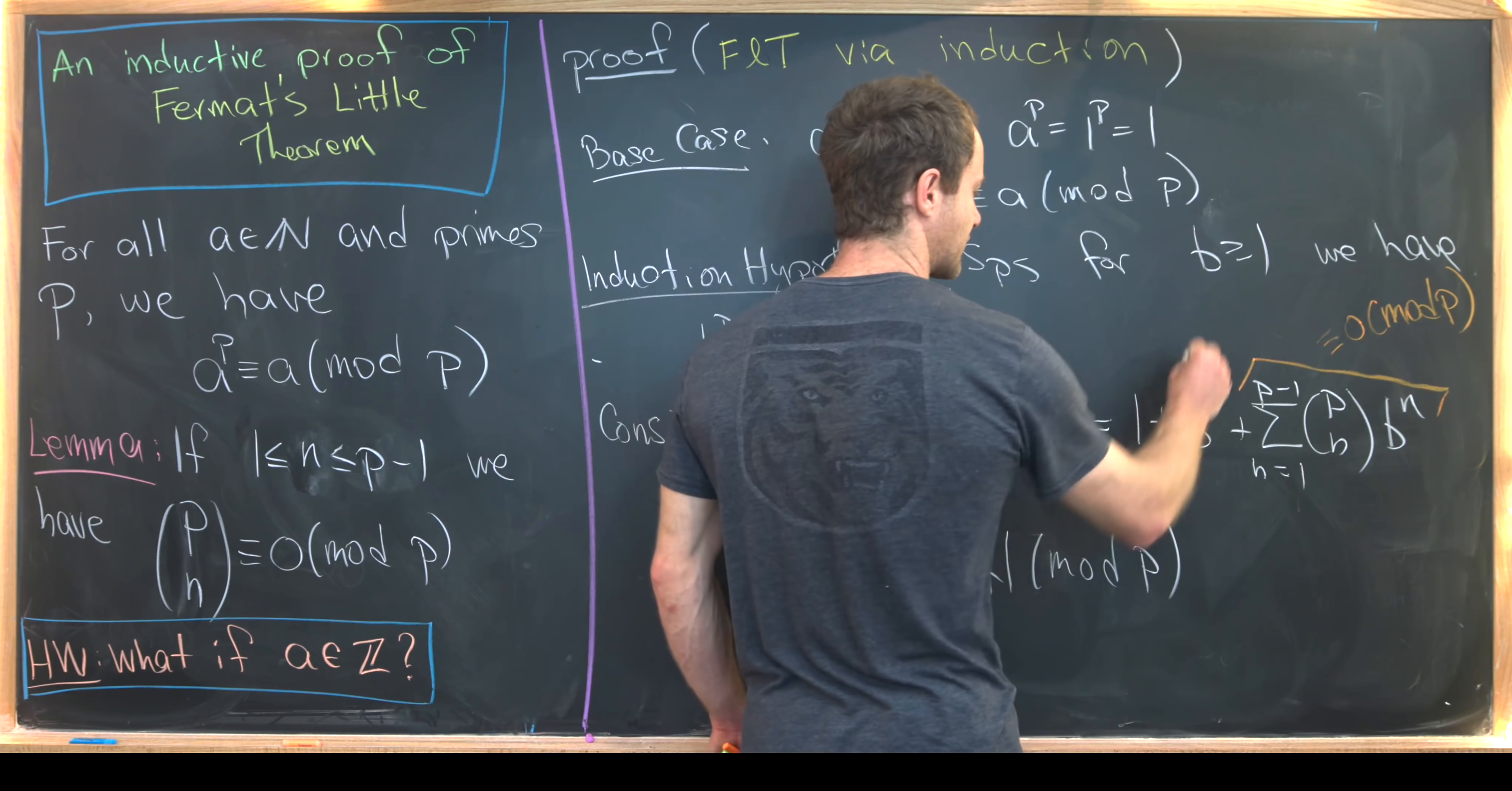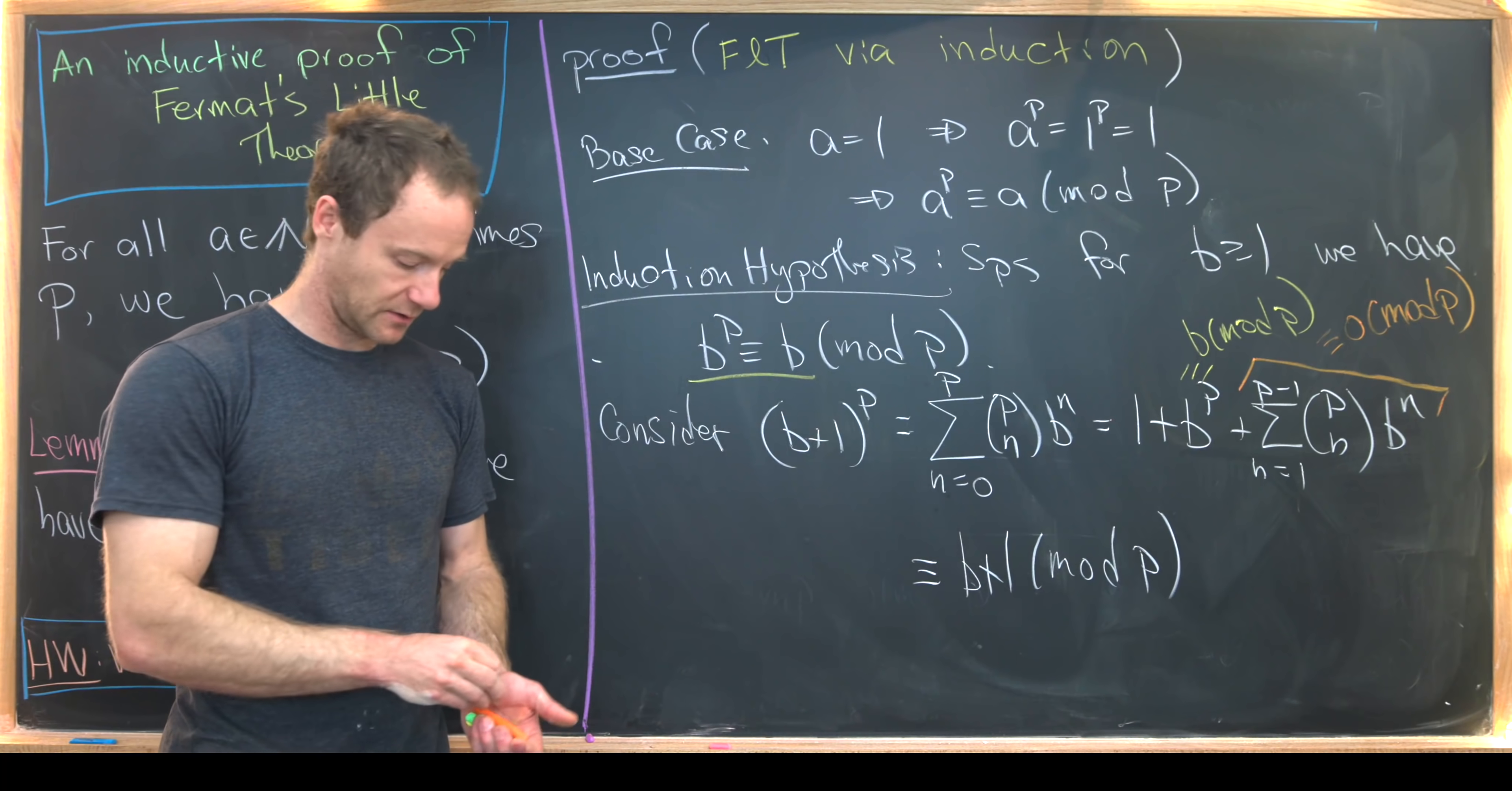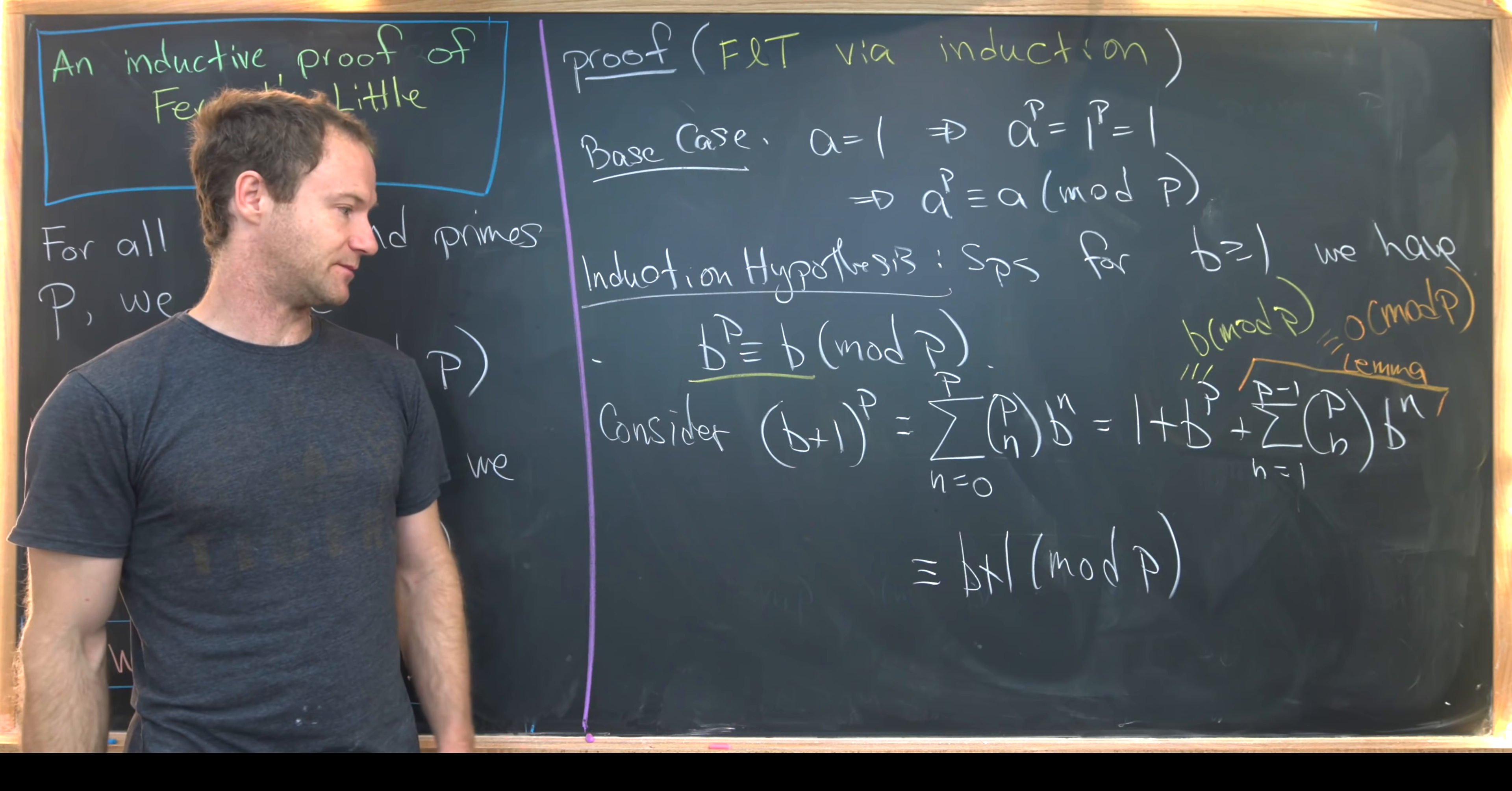So let's just reiterate what went on here. So the induction hypothesis gave us this congruence, which I have in yellow. And then the lemma told us that all of the rest of this stuff, which might be bad, is actually okay because it's just 0 mod P.